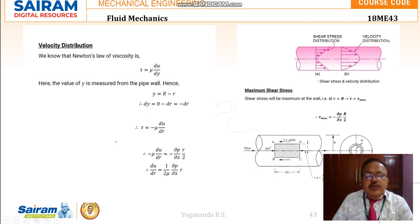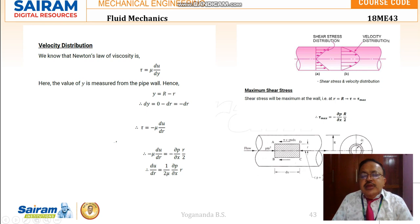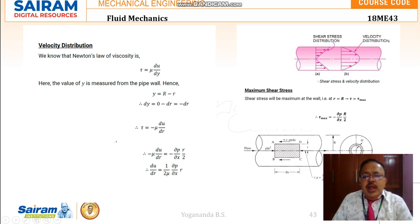Considering the fluid element in a pipe where we have viscous fluid flow, we have seen that the shear stress equation is tau = (del P / del X) · (r / 2). Shear stress will be maximum at the wall, that is when small r is equal to capital R. The fluid element has radius small r and the pipe has radius capital R. Exactly at the wall, small r equals capital R, so shear stress becomes maximum: tau_max = -(del P / del X) · (R / 2). This is the shear stress distribution.